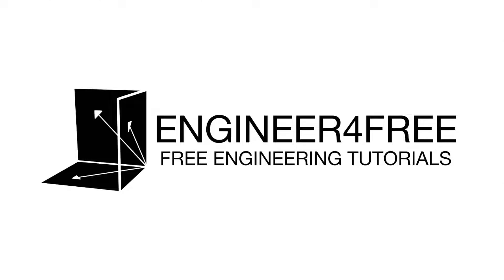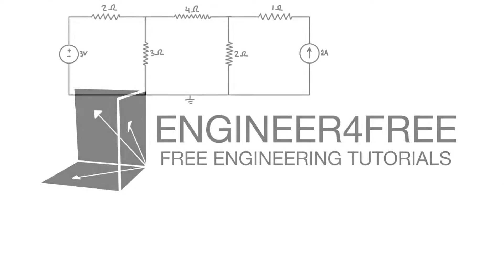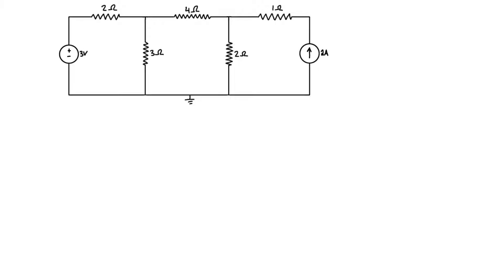Hey, what's going on everybody — back again with another example of mesh current analysis. In this case we have a circuit with two power sources and three loops, and we want to find what all of the different currents are in each resistor or each branch. We're going to do that using mesh analysis, so the first thing you want to do is identify your meshes.